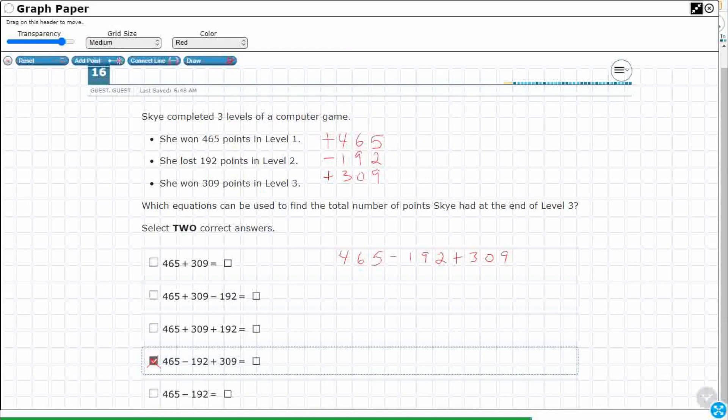So what is another way to represent this? It has to equal whatever this equals. I can actually do the math to figure that out. I could subtract 465 minus 192, that's 273. Now I've got to add my 309, so that's 582.